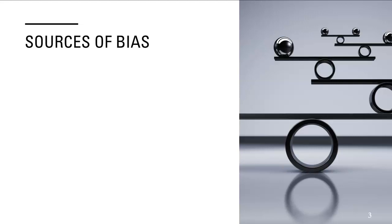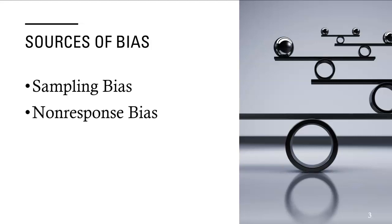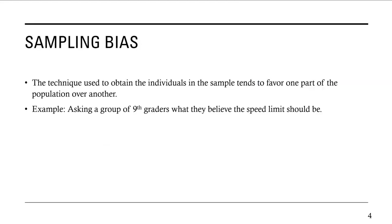There are different sources of bias — many, many sources of bias. If you do a Google search of sources of bias or reasons for bias in research, you'll see many different types of examples. But we're only going to talk about three in this video: sampling bias, non-response bias, and response bias.